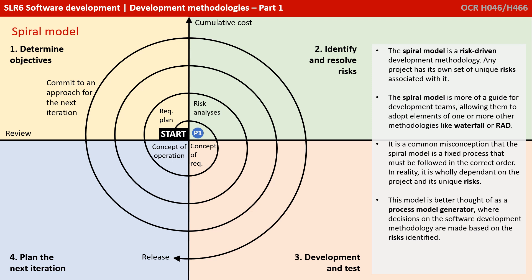We then carry out a risk analysis — what are the risks of this current system and how do we overcome them? A second prototype can be developed and shown to the user, producing more requirements. We verify and validate the second prototype and requirements, and produce a development plan. As the system takes more shape, we commit to an appropriate approach for the next iteration, again analysing any new risks that have arisen. Each time round we produce a successive prototype, much like the RAD model, and hopefully the risks are decreasing. We verify and validate everything done, come up with a test plan, and commit to an approach for the next iteration.